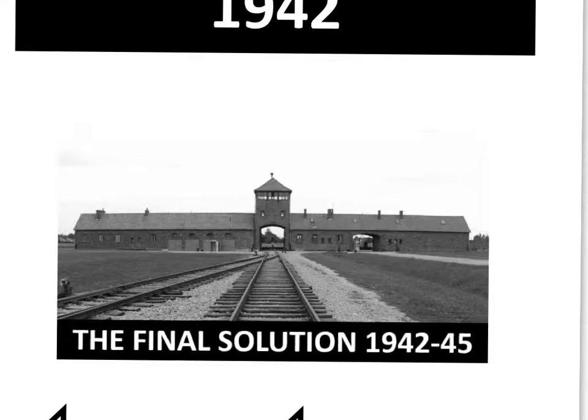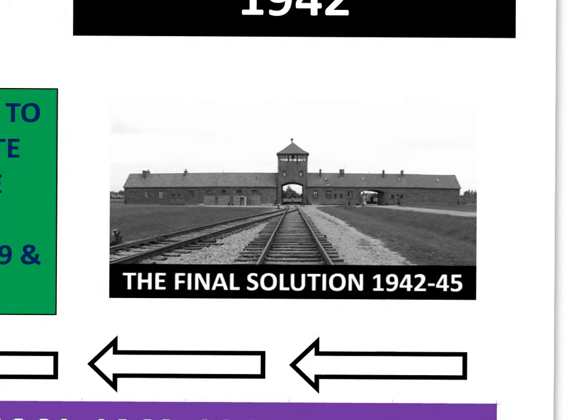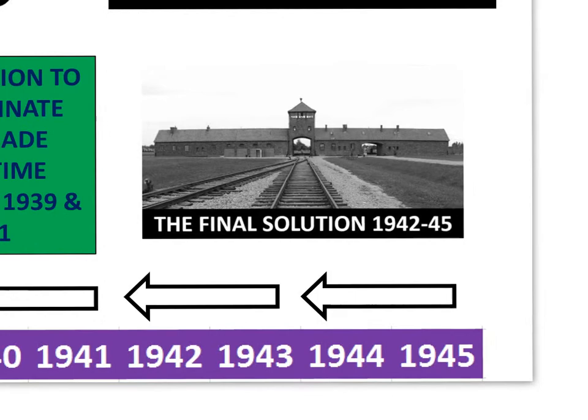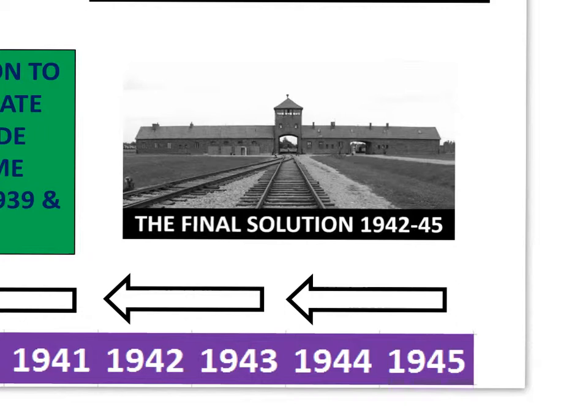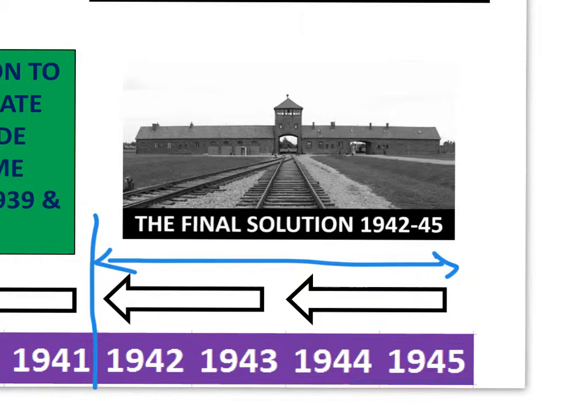In actual fact, the final solution — the term we use now to mean mass murder of the Jews — looking at this within a timeline, describes the policy used in the last three and a half years of the war. In other words, from 1942 to 1945. In absolute agreement with most historians nowadays, certainly by the beginning of 1942, Hitler had made the decision to murder all the Jews of Europe.